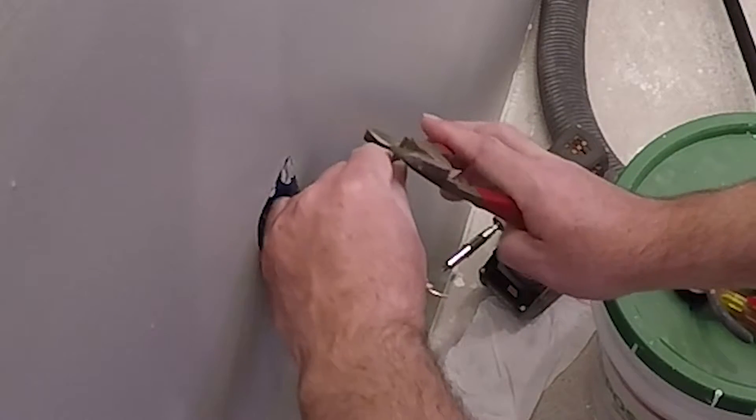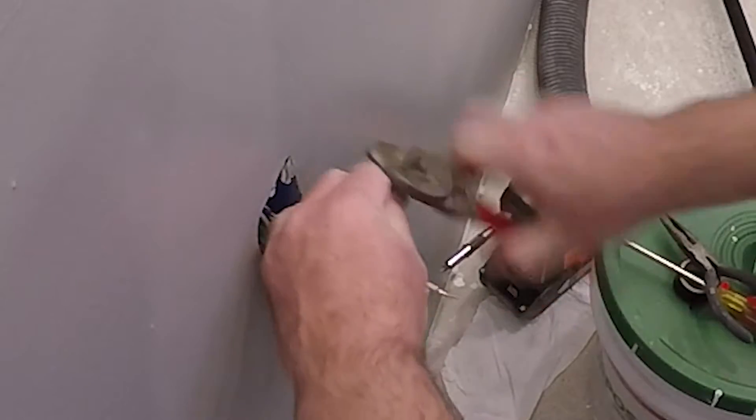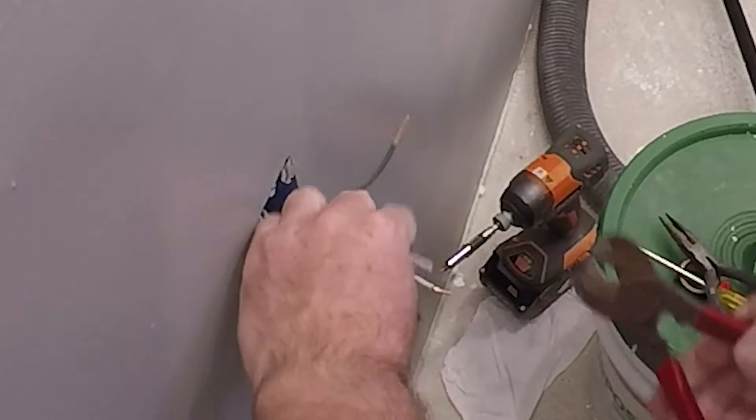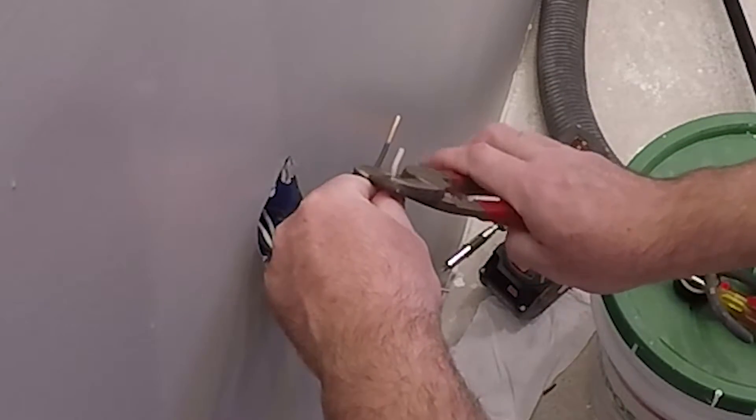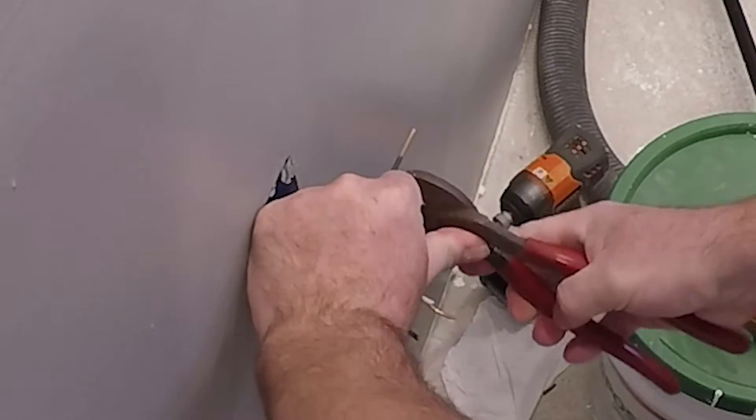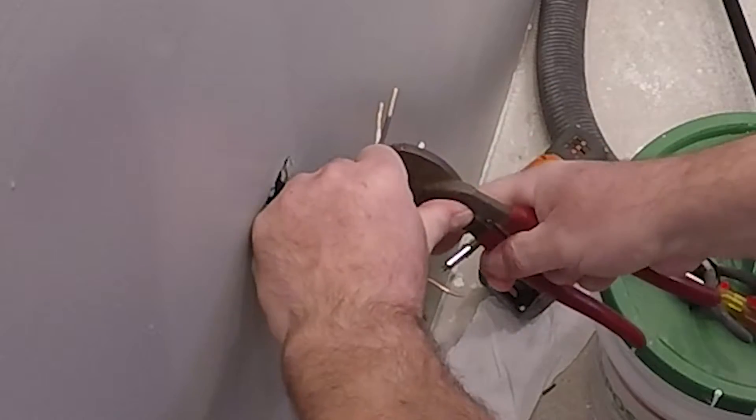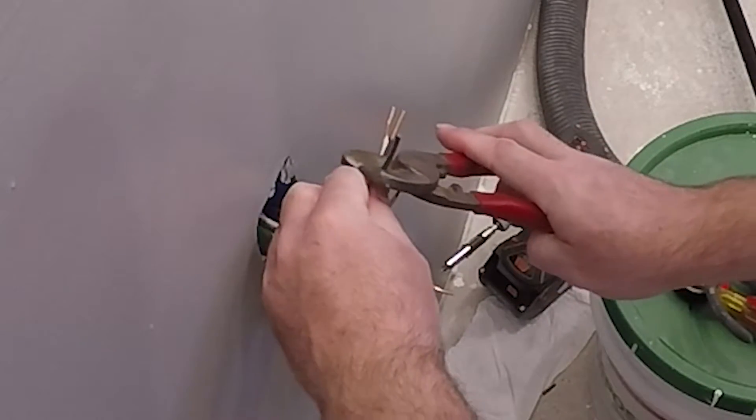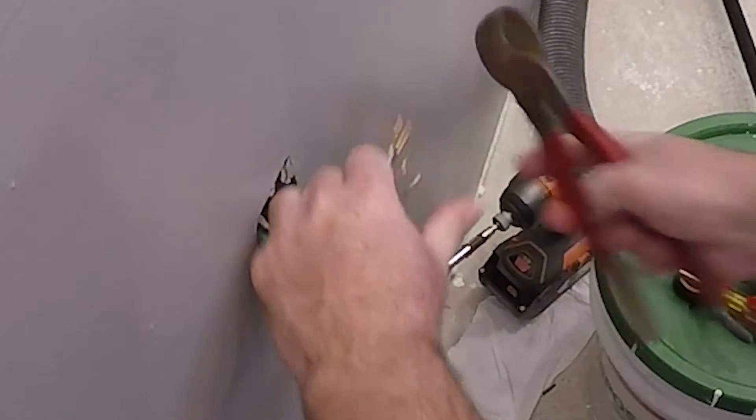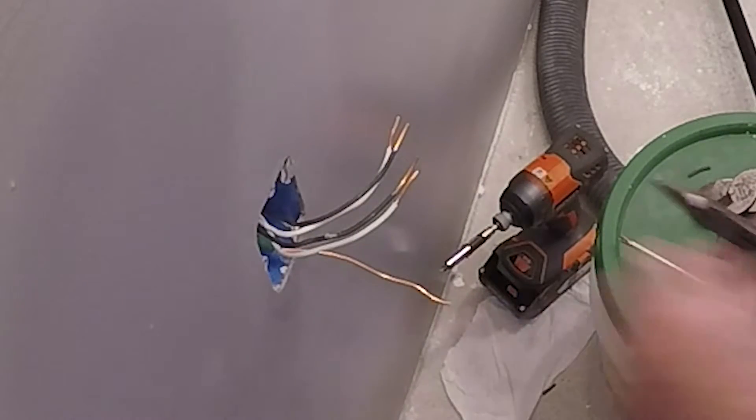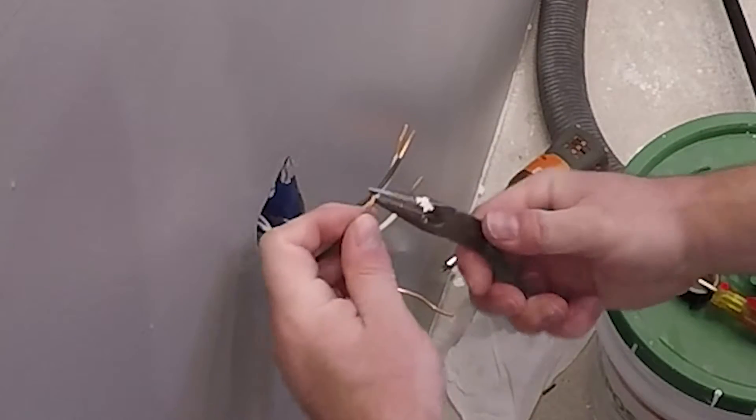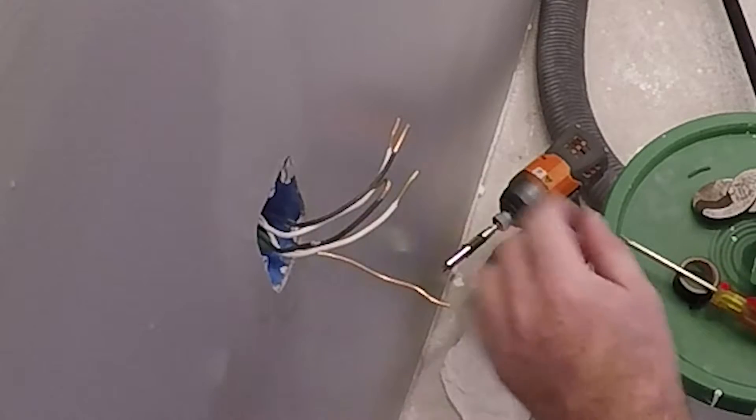Now I'm just trimming the wires to about 4 to 5 inches and stripping the ends. After the ends are stripped, I'm going to use needle nose pliers and loop each wire. The purpose of the loop is so that the wire will fit around the lug screw on the outlet.